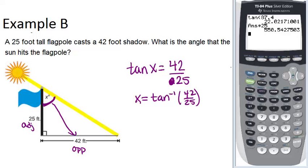So we can do that on our calculator. We have to push the second button and then tan in order to get tan inverse. And then plug in 42 divided by 25 and we get about 59 degrees. So X is approximately 59 degrees.